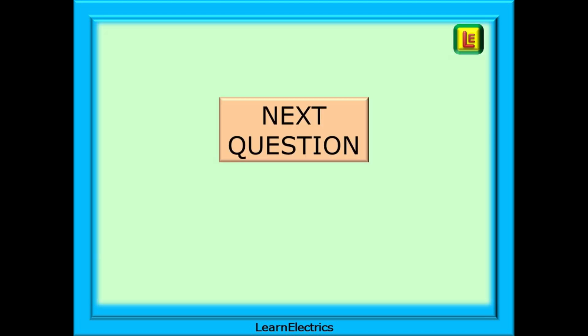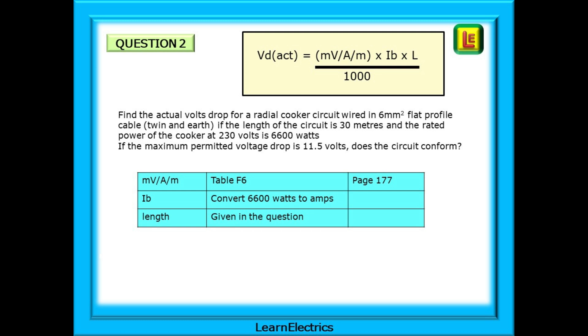Next question then and this time we will need to find the amps from the watts. Here's the question. Find the actual volts drop for a radial cooker circuit wired in 6mm flat profile cable twin and earth if the length of the circuit is 30 meters and the rated power of the cooker at 230 volts is 6600 watts. If the maximum permitted voltage drop is 11.5 volts does the circuit conform to the regulations?